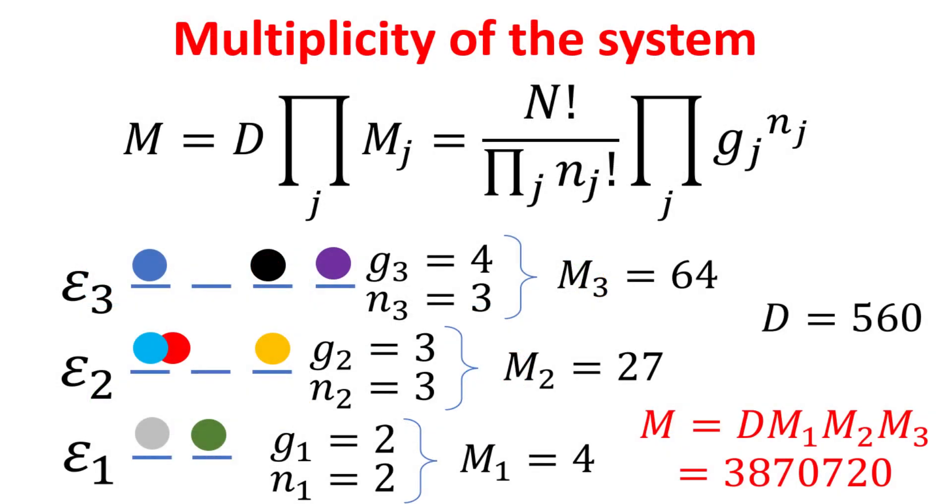Putting everything together, the total multiplicity m of the system will then be the multiplicity d, which denotes the number of ways of distributing nj particles across the different ej energy levels, multiplied by the product of all the mj, which denotes the number of ways of arranging the nj particles within each ej level.